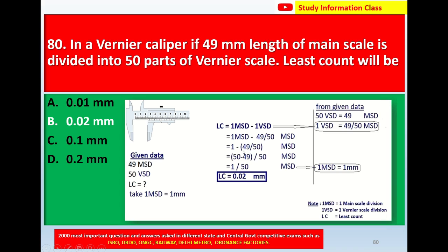Taking MST common from the bracket: LC = (1 − 49/50) MST = (50 − 49)/50 MST = 1/50 MST. Since one MST = 1 mm, the least count = 1/50 = 0.02 mm.